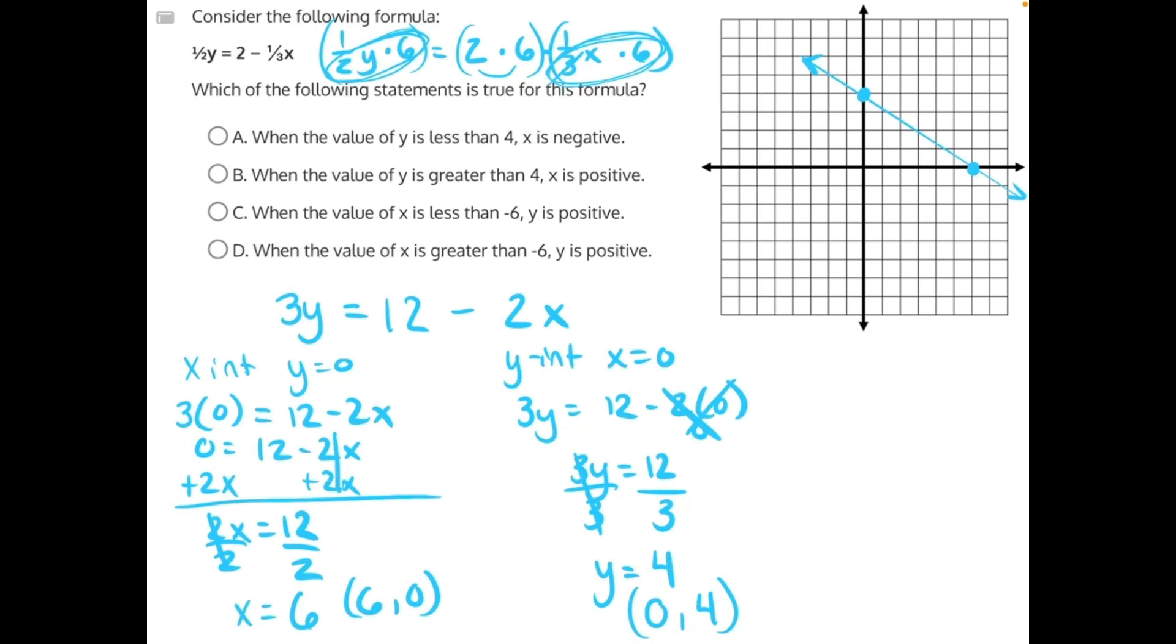Here I've plotted our two intercepts on the graph. 6 comma 0 was to the right by 6 and up 0. Then 0 comma 4 was up 4 and to the right 0.